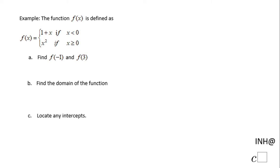Welcome, or welcome back, at C-Squared. In this example we have a function f of x which is defined as a piecewise function. The first piece is 1 plus x if x is less than 0, and the second piece is x squared if x is greater than or equal to 0.